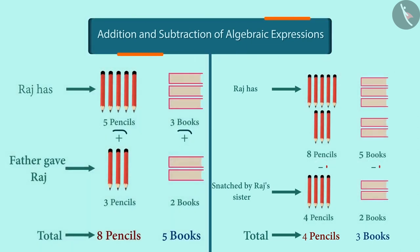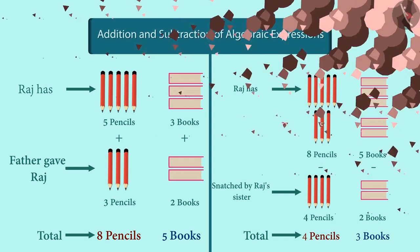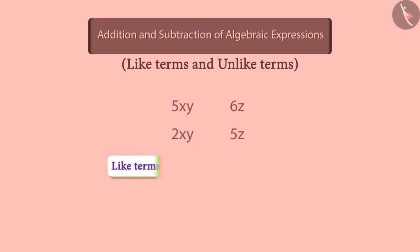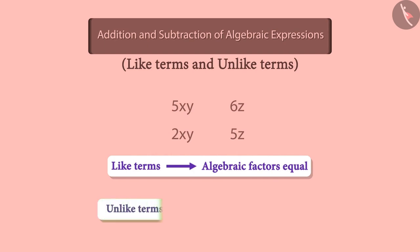Adding and subtracting algebraic expressions is also based on a similar logic. Let's check how. In our last session, we understood what like and unlike terms are. Look at these terms. We know that two terms are like if their algebraic factors are the same. Two terms are unlike if their algebraic factors are different.